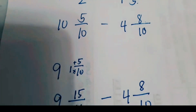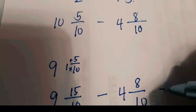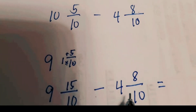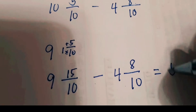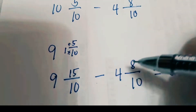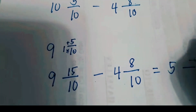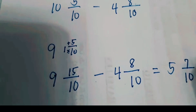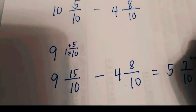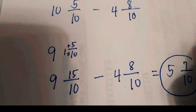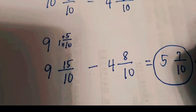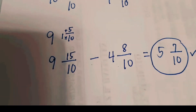Subtract: 9 minus 4 equals 5; 15 minus 8 equals 7. Copy the denominator 10. Your final answer is 5 and 7/10.